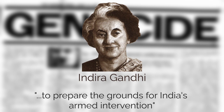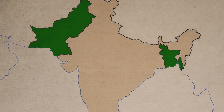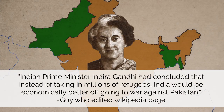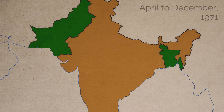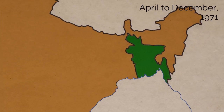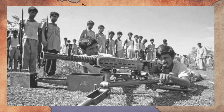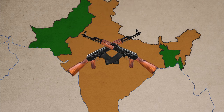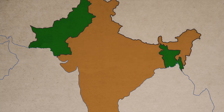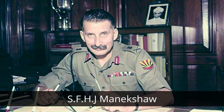This was the moment the world realised the scale of what was going on, and this was the article that led Indian Prime Minister Indira Gandhi to prepare the ground for India's armed intervention. The Prime Minister concluded it was much cheaper to go to a full-scale war rather than accepting millions of refugees. Soon the refugee camps became the site of guerilla warfare training, and India began preparing for the war itself under its Chief of Army Staff, S.F.H.J. Manekshaw.